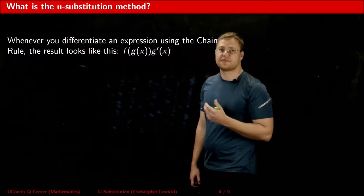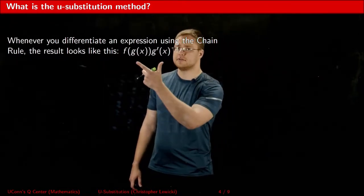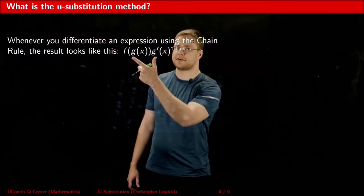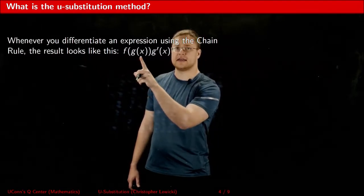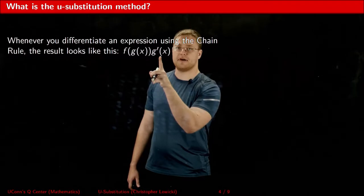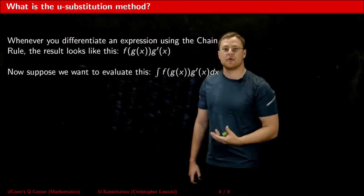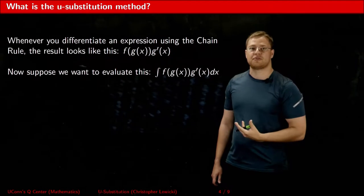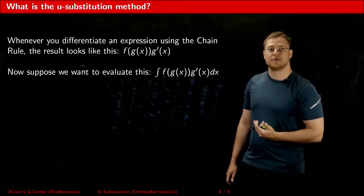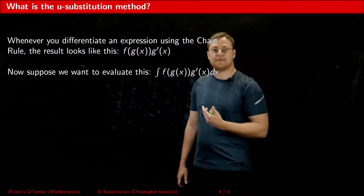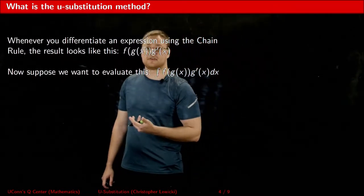Any time you use the chain rule to find the derivative of an expression, your end result looks like this: you have an expression where there is a function with an outside part and an inside part, that is then multiplied by the derivative of the inside part. Suppose I wanted to go in the reverse direction and find the integral of this expression. I could do a change in variables to simplify the expression, making finding its integral a lot easier.